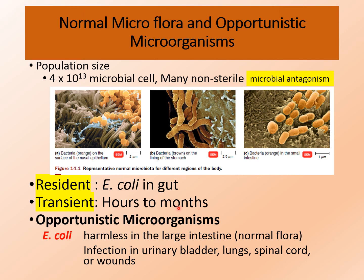Some of the normal flora may become pathogenic under specific conditions — they are called opportunistic microorganisms or opportunistic pathogens. An example is E. coli. E. coli is a normal flora and is harmless in its usual location, but if it gains entry into the urinary bladder, lung, spinal cord, or wounds, it may cause severe infections such as UTIs, pulmonary infection, meningitis, or abscesses respectively.